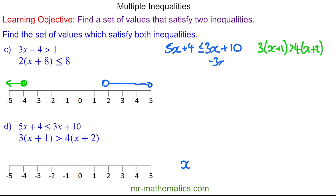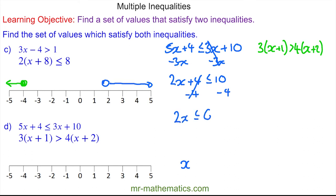We'll take away 3x from both sides and these will cancel, so we have 2x plus 4 is less than or equal to 10. We'll take away 4 from both sides and these will cancel, so 2x is less than or equal to 6. We'll divide both by 2, giving x is less than or equal to 3. This is a full circle above 3 going to the left.